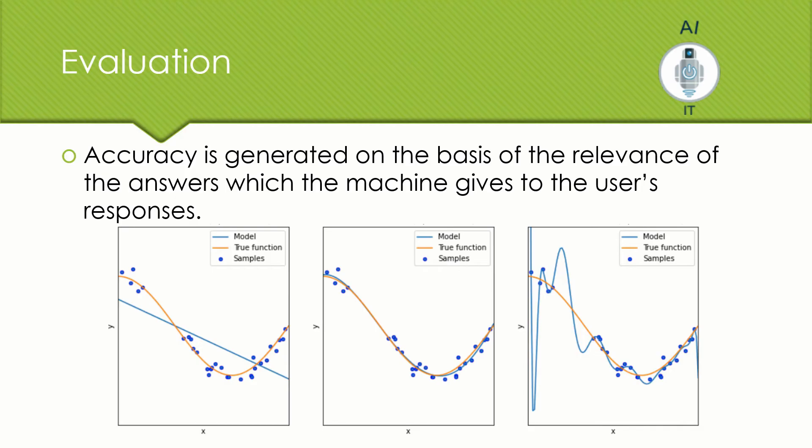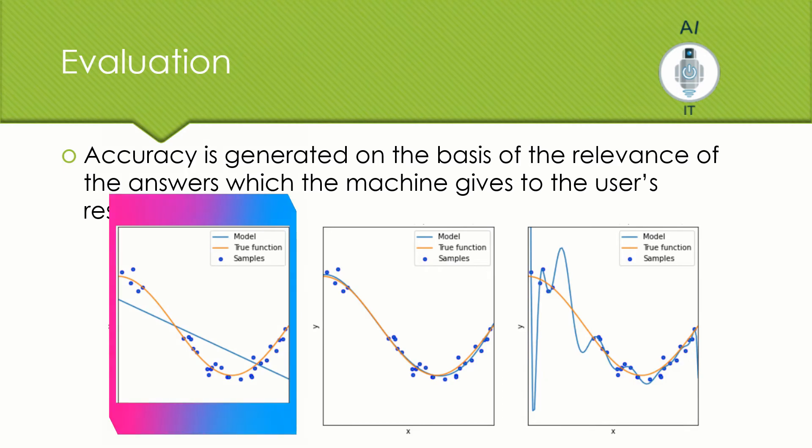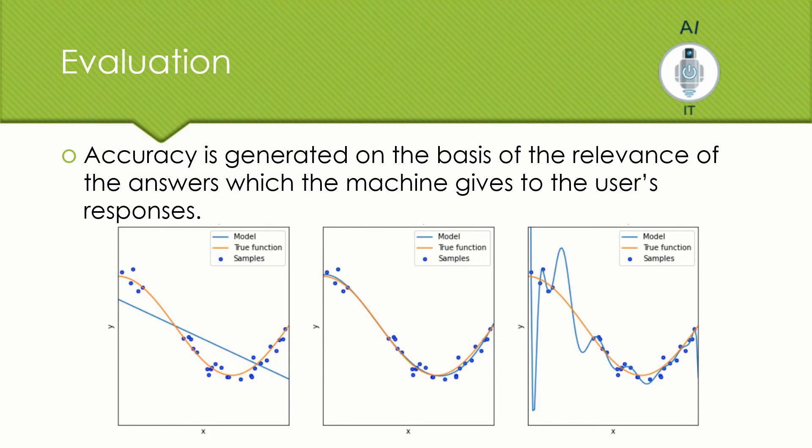If you see the first one, the first diagram, you see that the model's output does not match the true function at all. There are some data points which are over here that are left out. And then you see there are some points which are left out over here. And then you see some points left out here. So, it is not fitting properly. Your accuracy is going to be very low here. Now, this is said to be under fitting. So, you do not use this model.